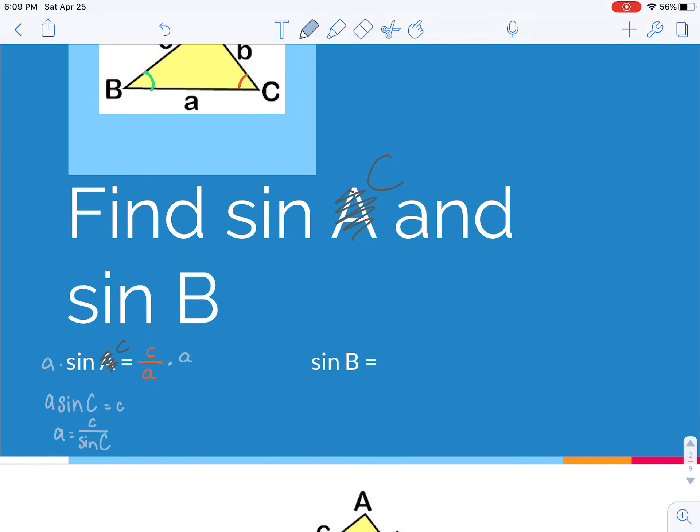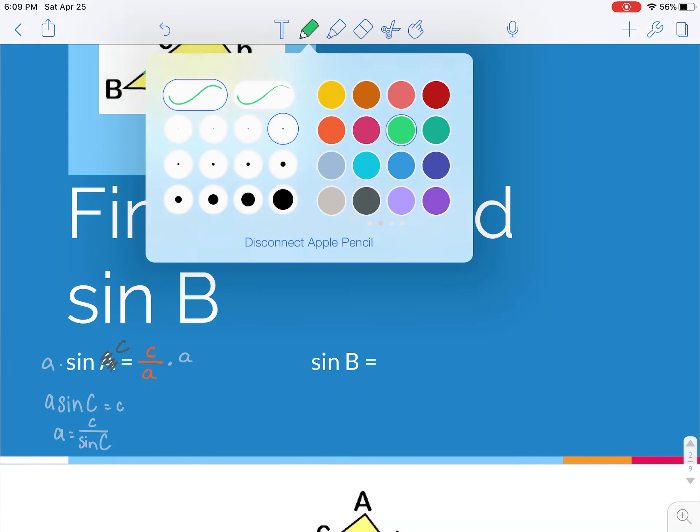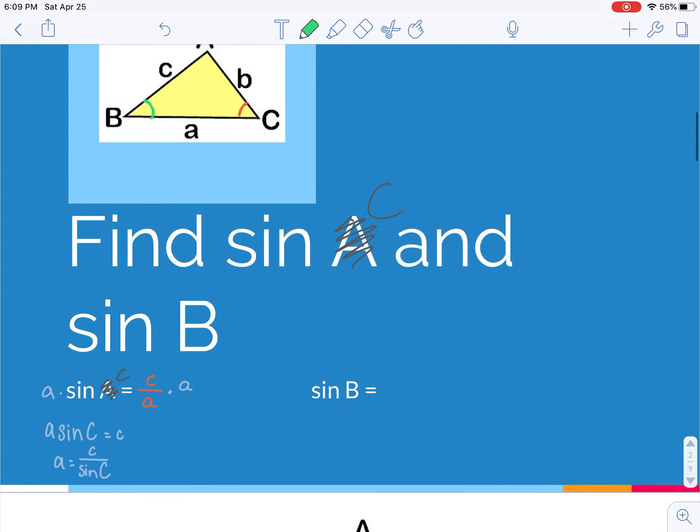So A equals little c over sine of angle C. And just keep that in the back of your minds. And I'm going to do the same thing with angle B. In this case, sine of angle B is my opposite side, little b,